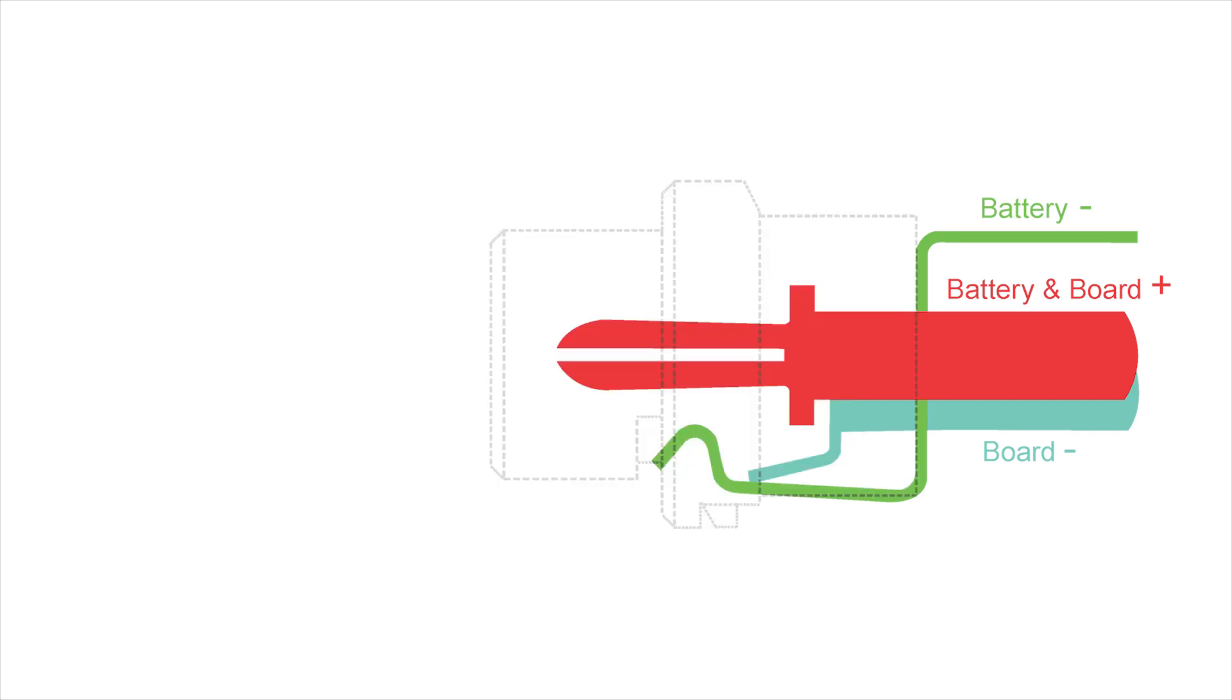With a better view of the internal contacts, we can get a proper understanding of what's happening. The switch in this jack is very simple. It is comprised of one contact, the battery negative, acting as a spring. That, when at rest or in the switch's closed position, touches the board negative contact.